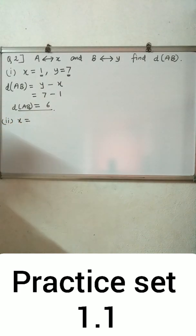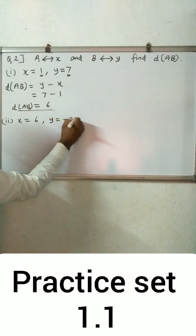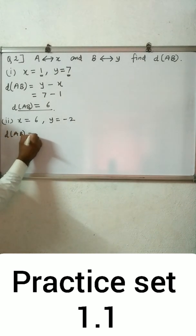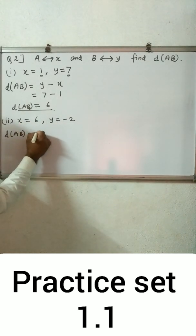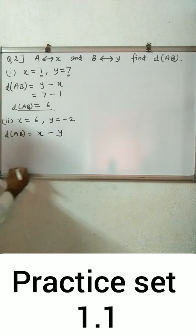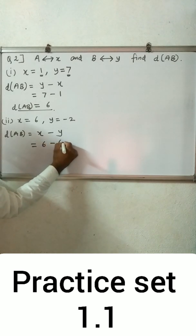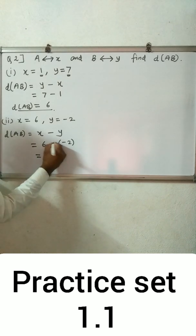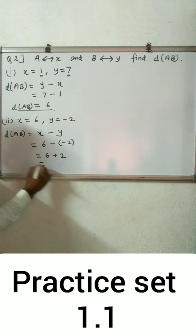Second example: x equals 6 and y equals minus 2. Since 6 is greater than minus 2, distance AB equals coordinate of x minus coordinate of y: 6 minus (minus 2) = 6 plus 2 = 8. So distance AB is equal to 8.